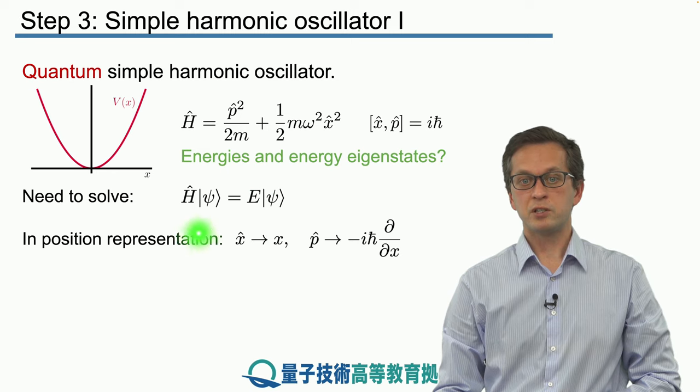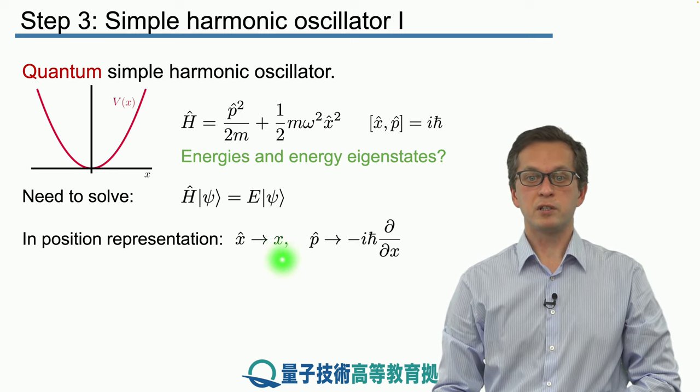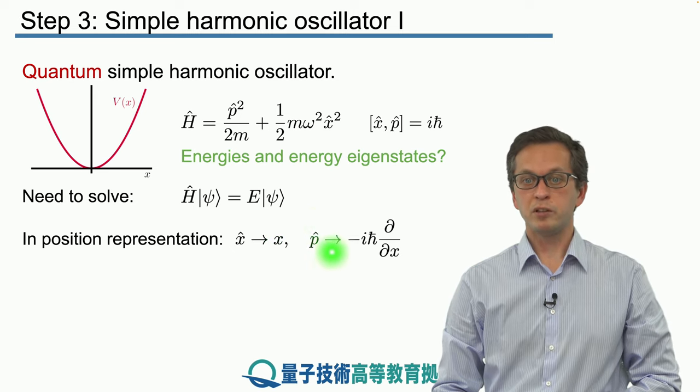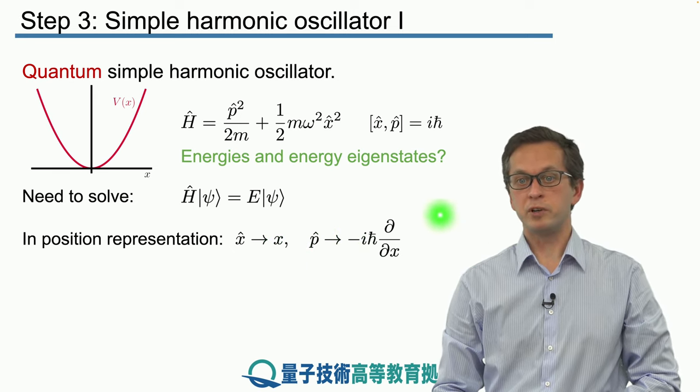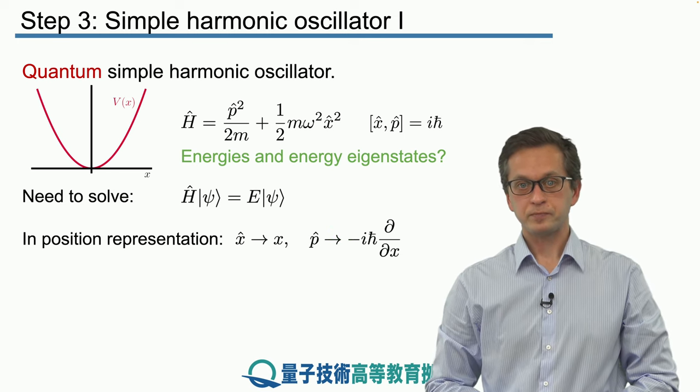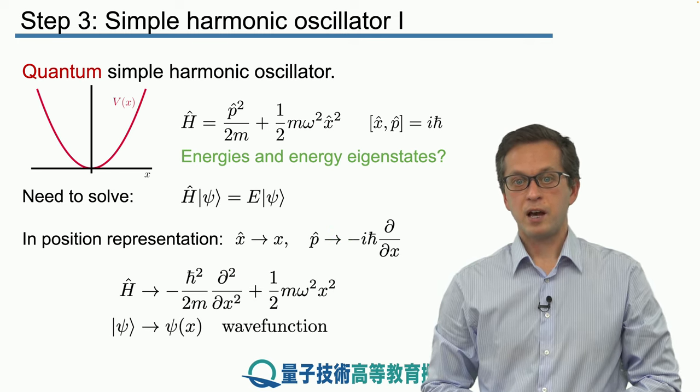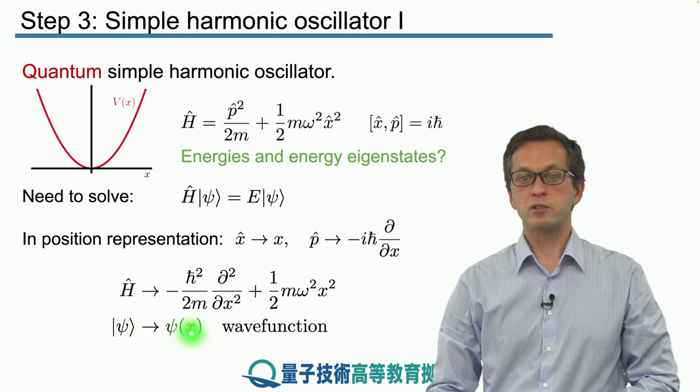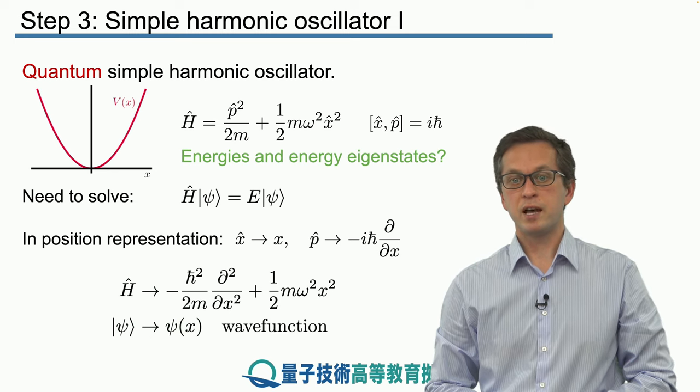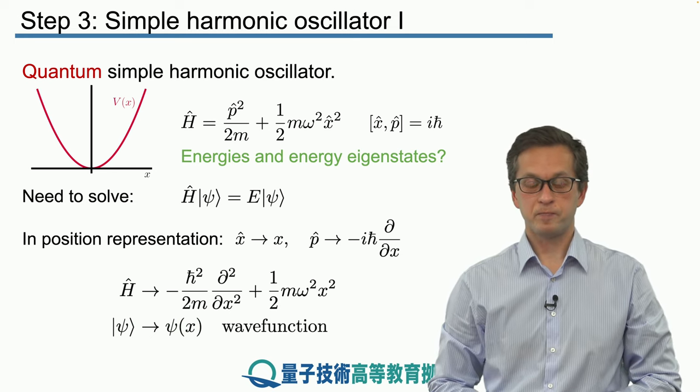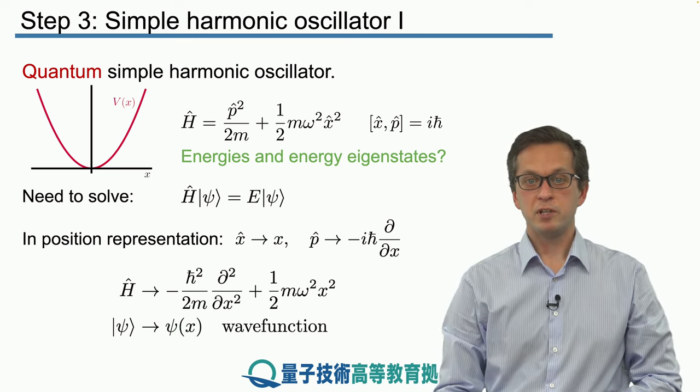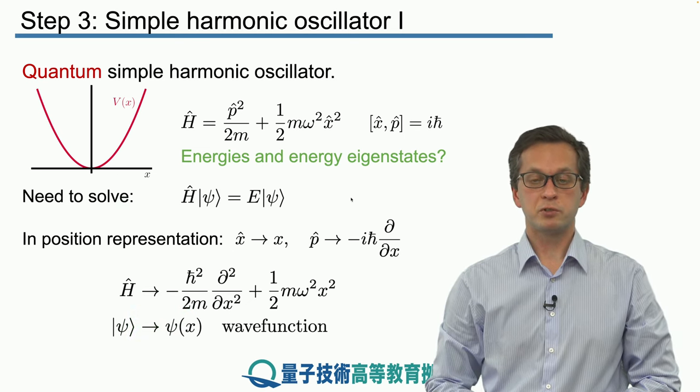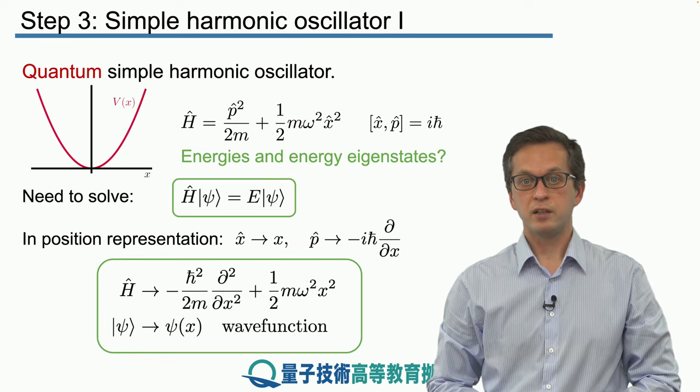In position representation, we replace the operator x with multiplication by scalar x, and the momentum operator becomes a differential operator given by this expression. Our ket psi, which was a vector, becomes the wave function psi, which is a function of x. Substituting the form of the Hamiltonian and wave function back into our time-independent Schrodinger equation, we obtain the following.